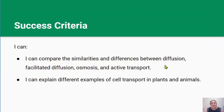Well done, you've reached the end of the lesson. By now you should be able to compare the similarities and differences between diffusion, facilitated diffusion, osmosis, and active transport. You should also be able to explain different examples of cell transport in plants and animals. Thanks for watching and we'll see you in the next video.